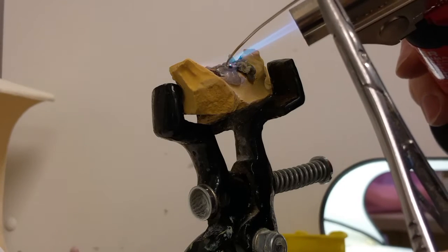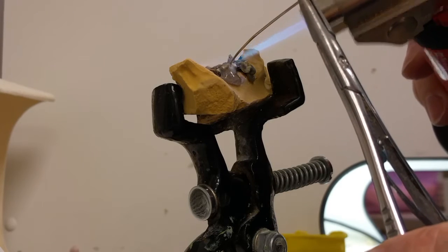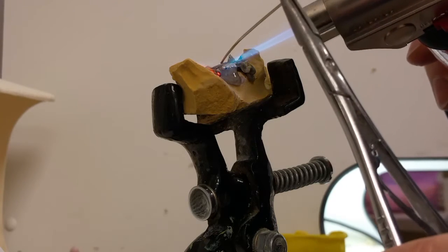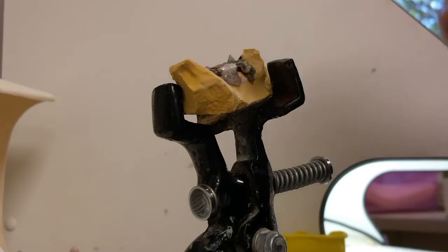I apply the solder about when the flux turns clear. When the solder goes on, it kind of is in a little ball. The more heat I apply, the more it relaxes. You'll see I lift the torch off sometimes when I think it's getting too hot.